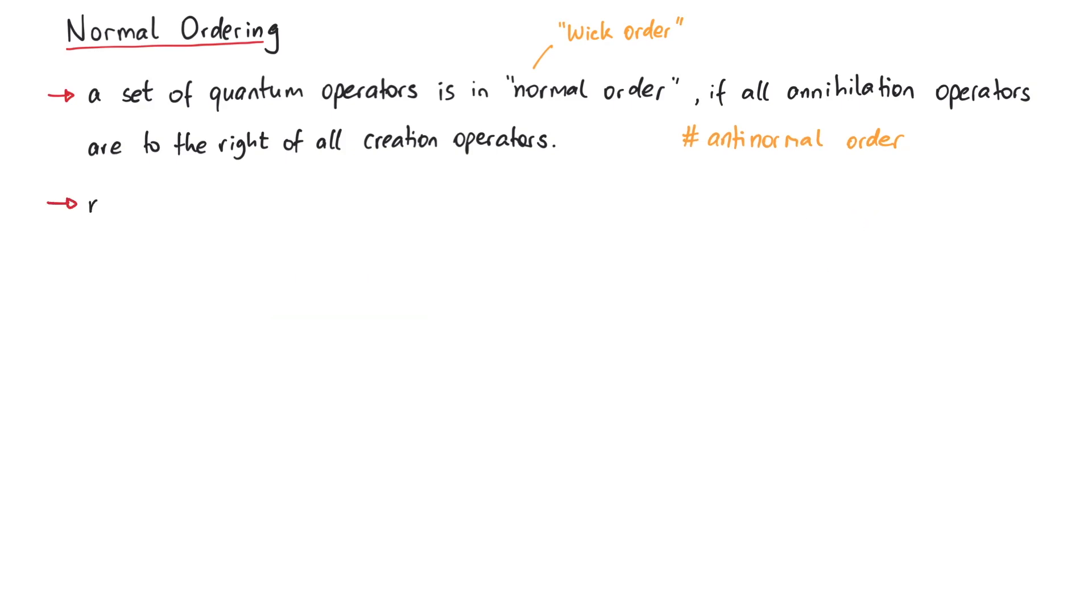There are two ways to denote taking the normal order of some expression, either with an uppercase N or using two colons. As an example of this notation, we can write down the fact that normal ordering is an idempotent operation like this.